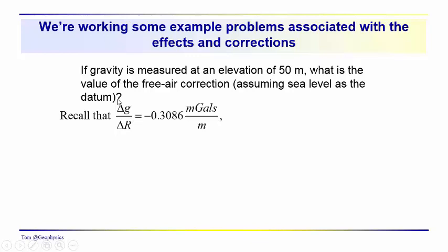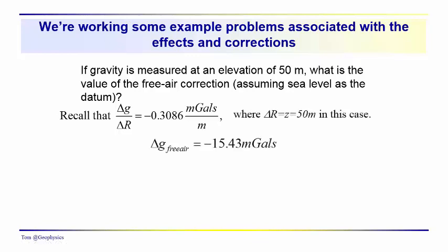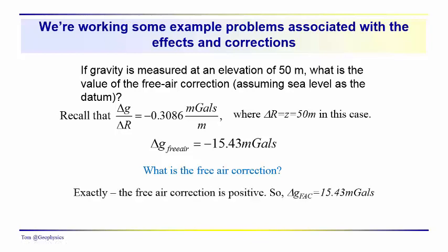Start by recalling what our delta g with respect to r is. As we change our distance from the center of the earth, we are looking at an effect of minus 0.3086 milligals per meter, and delta r — the elevation — is 50 meters. So the free air term is minus 15.43 milligals. In other words, the acceleration due to gravity would drop by 15.43 milligals as you go up 50 meters above sea level. The correction changes the sign, so the free air correction delta g is a positive 15.43 milligals.